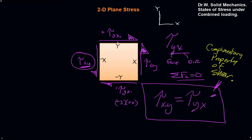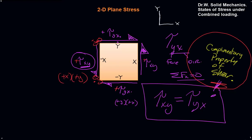An easy way to remember this is they will always be tip-to-tip or tail-to-tail when we set this up. If the shears were in the other direction, they would line up tip-to-tip and then tail-to-tail in the other direction. Notation-wise, on the negative x-face pointing in the negative y-direction, negative times negative is positive — so these would all be positive and all have the same magnitude by the complementary property of shear.